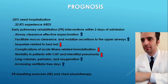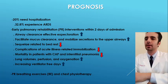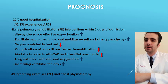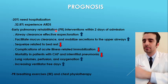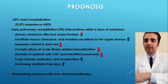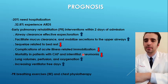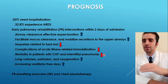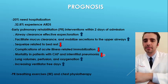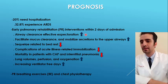The prognosis of the disease is still unclear, but generally 20% of patients need hospitalization, and one third of them experience ARDS during their hospital stay. Studies have shown that early pulmonary rehabilitation, or PR, and short-term interventions within two days of admission can reduce mortality in patients with community-acquired pneumonia and interstitial pneumonia.